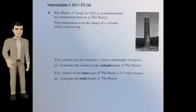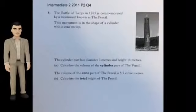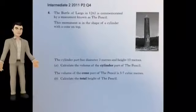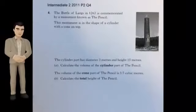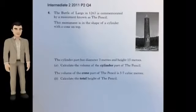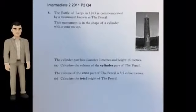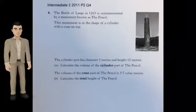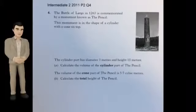The Battle of Largs in 1263 is commemorated by a monument known as the pencil. This monument is in the shape of a cylinder with a cone on top. The cylinder part has diameter 3 metres and height of 15 metres. Calculate the volume of the cylinder part of the pencil. The volume of the cone part of the pencil is 5.7 cubic metres. Calculate the total height of the pencil.